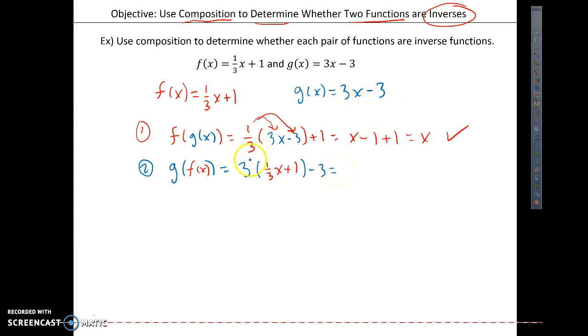So now I'm going to distribute 3 times one third x is x. 3 times positive 1 is a positive 3. I'm going to take my negative 3 and x plus 3 minus 3 is just x. So both conditions were satisfied.